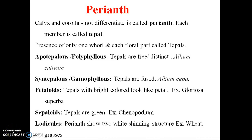Perianth is differentiated by calyx and corolla, and every member present in the whorl is called a tepal. This can be free, which we call polyphyllous, or fused, which we call gamophyllous. If it is green we call it sepaloid, and if it is a bright color like a petal then it is petaloid.